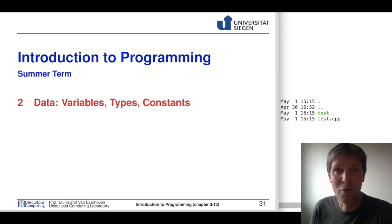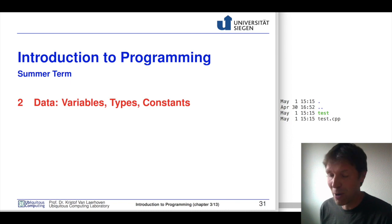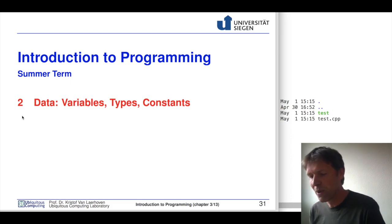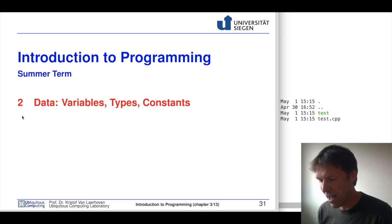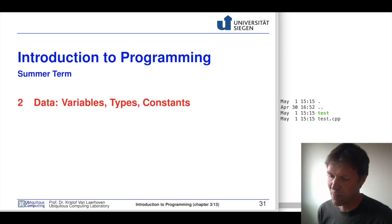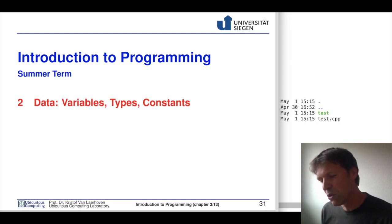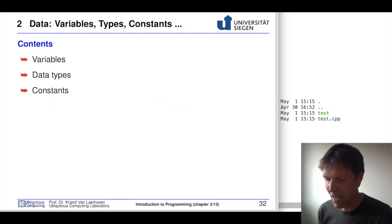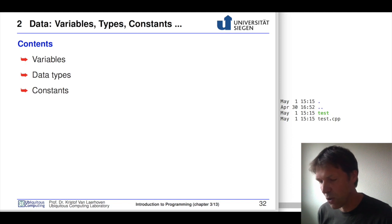Welcome to the next session of introduction to programming. Now we're going to see the most important things about variables. When we had our examples in chapter one, we already used int for integer, float for floating points, and there are several of those variable types. And that is what we're going to see today.